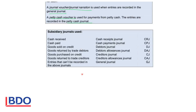When we receive cash, regardless of what we receive it for, it will be recorded in the cash receipts journal. When we pay out money it will be recorded in the cash payments journal. Any payments except payments out of petty cash will be recorded in the cash payments journal.